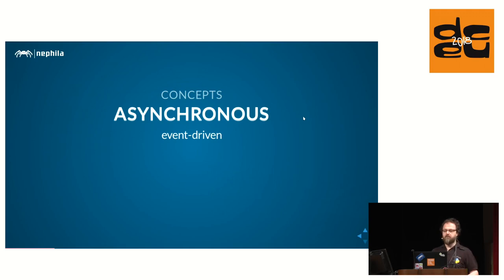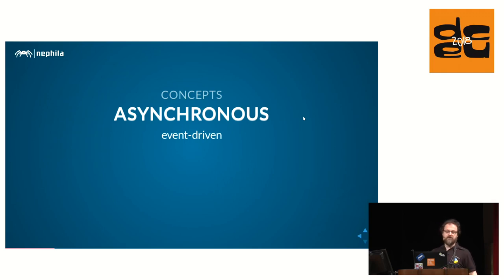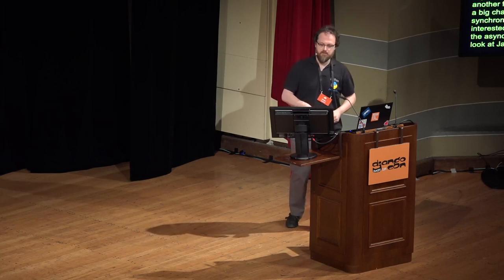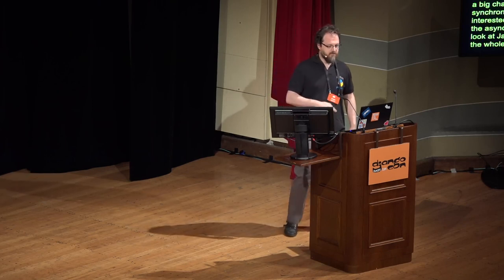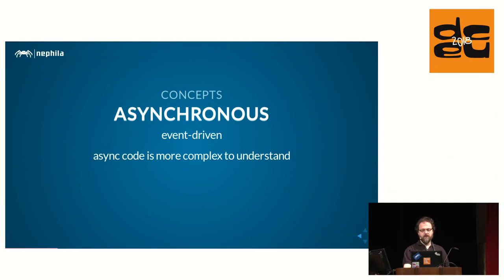The first concept is asynchronous. In this context, let's say asynchronous means event-driven - some event happens and our application responds to it. For example, a client connects to a WebSocket endpoint and a function is called, or an object is created in a database and another function is called. This is a big change from the usual synchronous HTTP world. If you're interested in how Django works in a synchronous world, have a look at Jacob Kaplan-Moss's Django talk from 2015 about the request-response cycle.